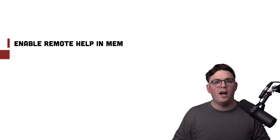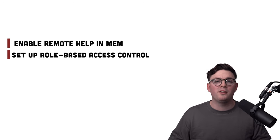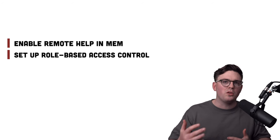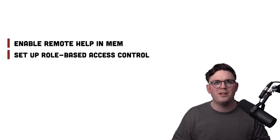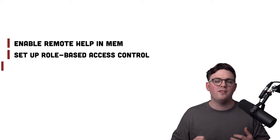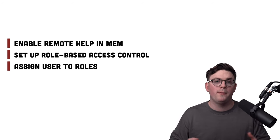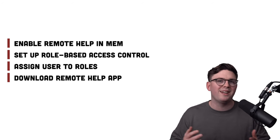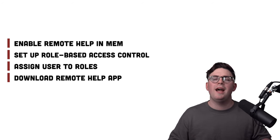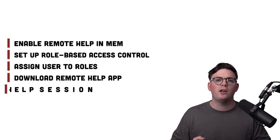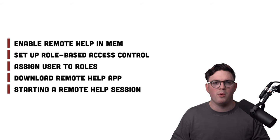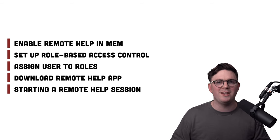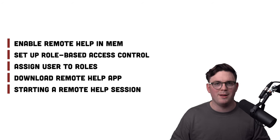To get this going, it's really nice and simple. First, we just need to enable Remote Help within Intune. Then we can set up all our RBACs — who can help people, what can they see, who's got view, full control, elevation, and so on. We then configure access to Remote Help, look at how to download the Remote Help application, and finally start a remote session within Remote Help. Let's dive into Microsoft Intune and start enabling Remote Help.